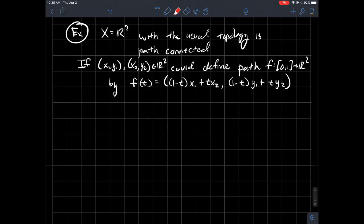Maybe I'll just do it with a line. So if I picked two arbitrary points in the plane, (x1, y1) and (x2, y2), I could tell you about a path that connects these two points.